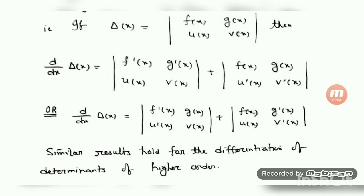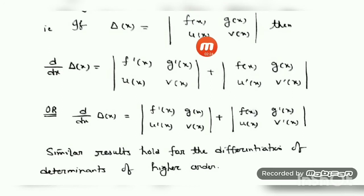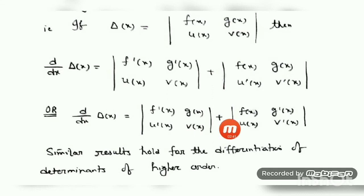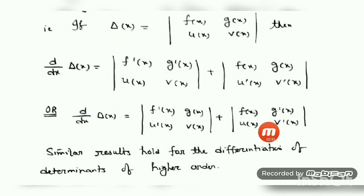If the question is given in algebraic form, then you just solve or find out the value by using the method of evaluating the determinant. The same question can also be done column-wise: d/dx of Δ(x) — differentiating the first column gives f'(x) and u'(x), keeping the second column as it is. Plus, keep the first column f(x), u(x) as it is, then take the derivative of the second column: d/dx of g(x) is g'(x), and d/dx of v(x) is v'(x).